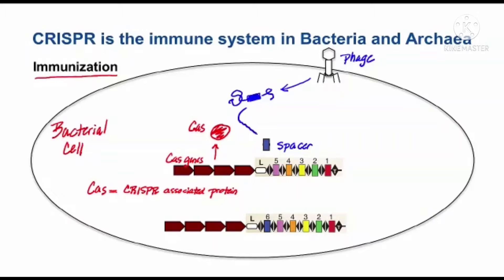The Cas system will process the phage DNA into spacers, so the spacers are actually phage sequences. Then that spacer is incorporated into the CRISPR array so that the blue sequence now appears in the array. So now the bacteria is ready just in case it's going to be infected again.